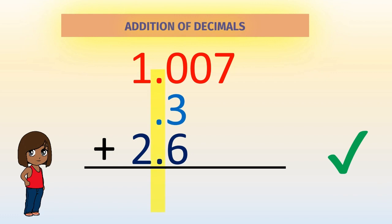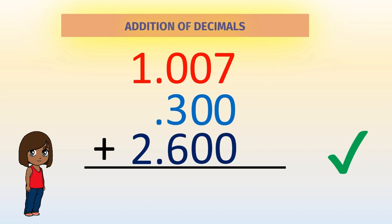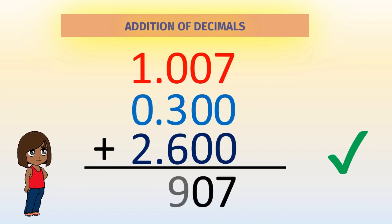The next step, add zeros to make them like decimals. Now you can go ahead and add. There you have it. That's how you add decimal numbers.